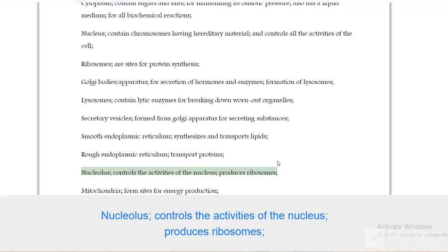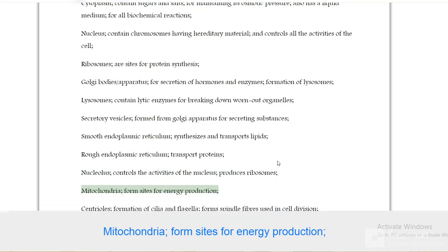Nucleolus controls the activities of the nucleus, produces ribosomes. Mitochondria form sites for energy production.